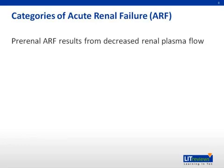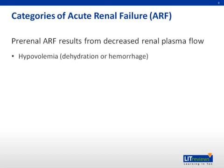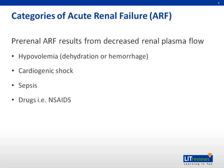There are three categories of acute renal failure. The first is prerenal acute renal failure, or prerenal azotemia, which results from decreased renal blood flow or renal perfusion pressure. Prerenal acute renal failure along with acute tubular necrosis account for more than half of hospitalized cases. Causes of decreased renal blood flow include hypovolemia, volume depletion or hemorrhage, cardiogenic shock, sepsis, medications such as NSAIDs, and structural irregularities of the vessels such as renal artery stenosis.